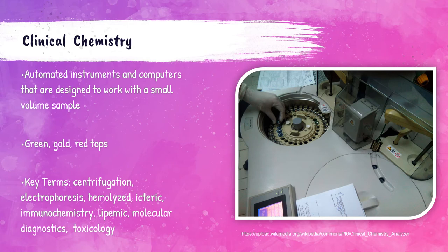The clinical chemistry laboratory tests serum, plasma, and other body fluids such as urine, cerebrospinal fluid, and pleural fluid. They use large automated instruments designed to work with very small sample volumes. Key terms include: centrifugation, electrophoresis, hemolysis, icterus, immunochemistry, lipemia, molecular diagnostics, and toxicology. Centrifugation is used to separate the serum or plasma from red blood cells, since most clinical chemistry tests are performed on serum or plasma.